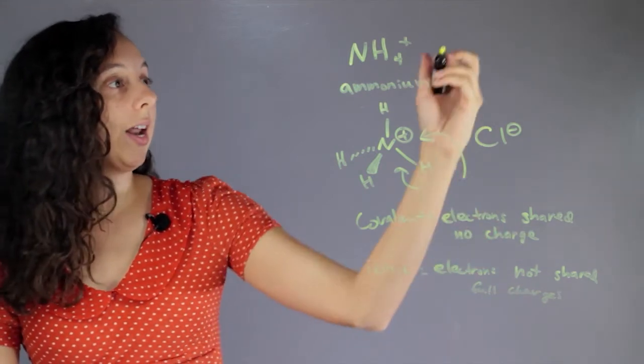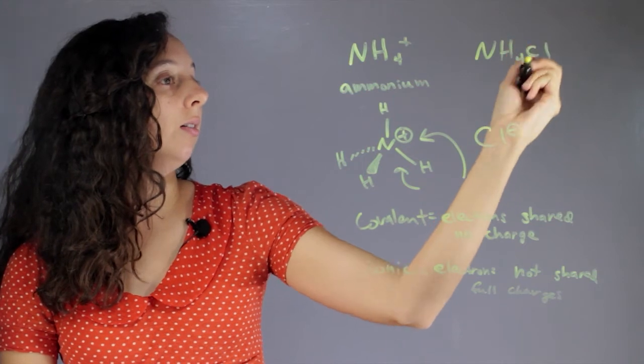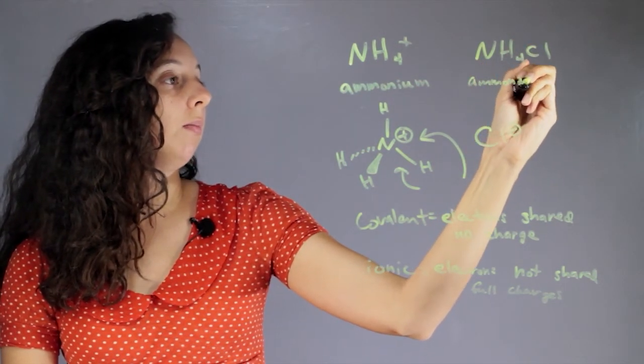So you can write that out as NH4Cl, and this would be called ammonium chloride.